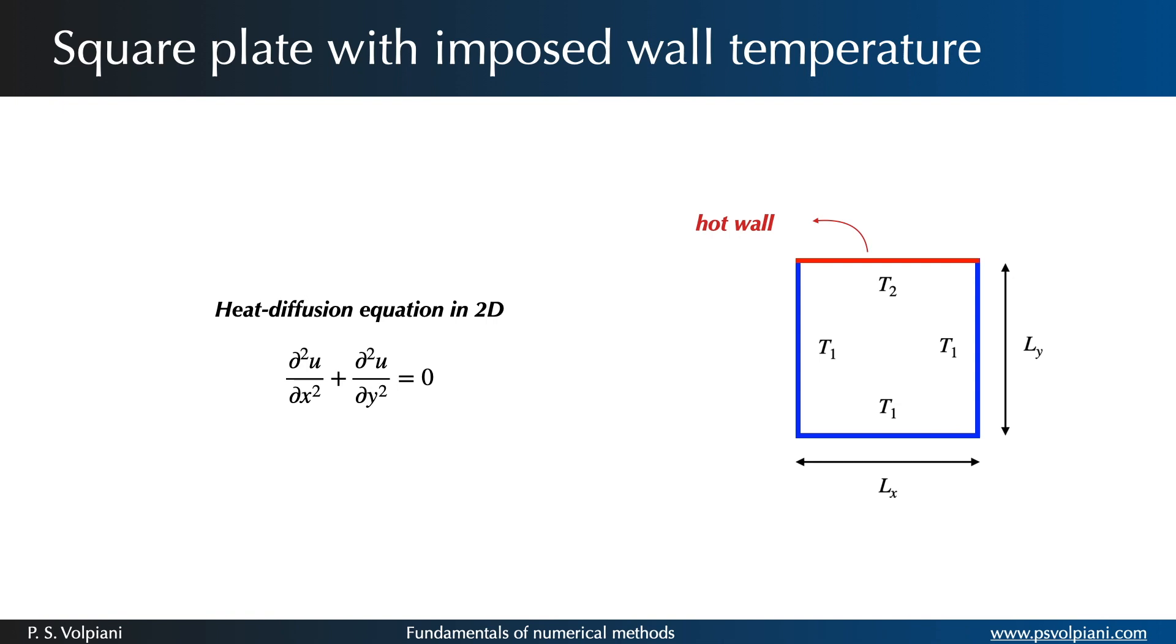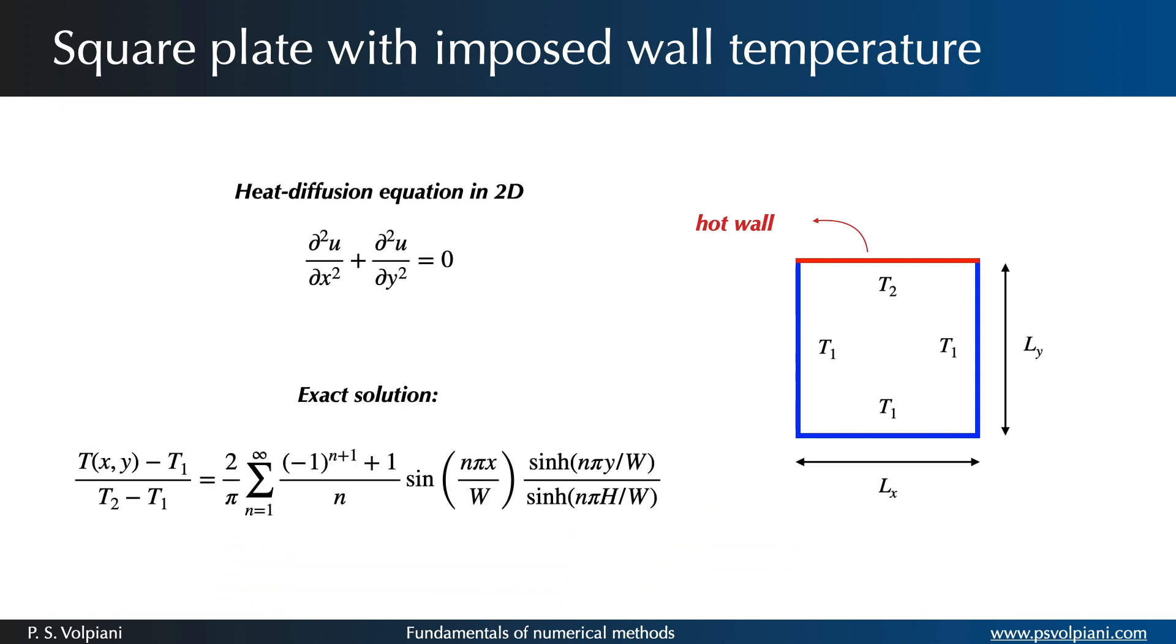Let's consider the case of a rectangular domain. Our objective is to derive the temperature distribution over the plate under the following conditions. While in the left, right and bottom walls we have the same temperature T1, at the top wall we have a different temperature T2.